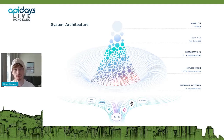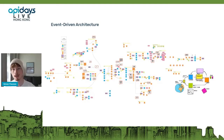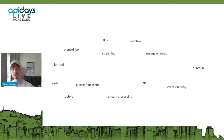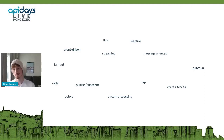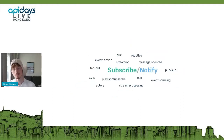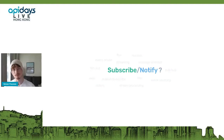To facilitate that communication, we see the advent of event driven architectures where you're using events as a way to communicate. There's a lot of different ways to describe this — flux, reactive, streaming, message oriented, publish subscribe, CEP, stream processing, event sourcing, fan out, actors. There's a lot of things. But if I were to boil them down into one thing for this introduction, it would be that they're all talking about a way of communicating which I'm going to denote as subscribe notify in this presentation.